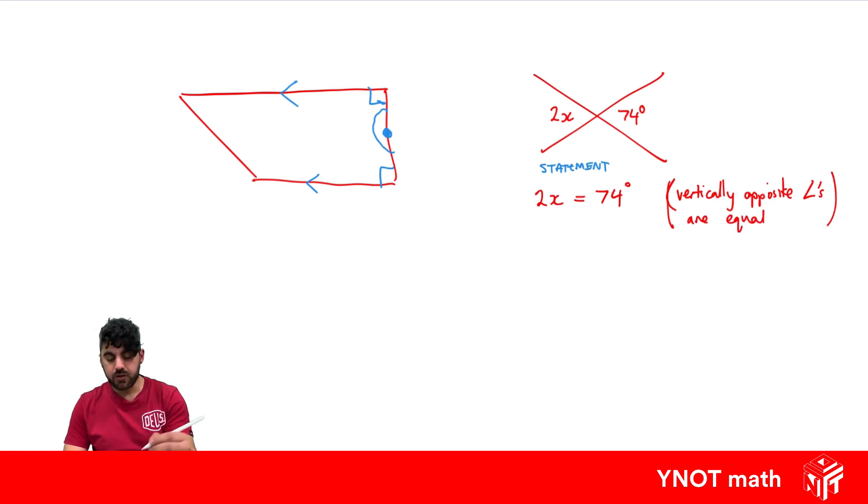So when we make those reasons, sometimes we're allowed to use abbreviations like this one. Angles and some abbreviations you can use. Angle, triangle, parallel and perpendicular.